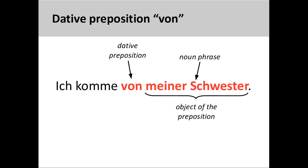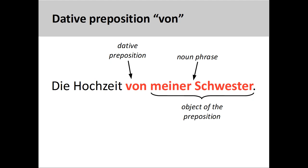The preposition von can be used to describe the act of arriving from a certain location or person, such as ich komme von meiner Schwester — I'm coming from my sister, or more loosely, I've come from visiting my sister. Von can also be used to express a relationship of belonging between two nouns, for example die Hochzeit von meiner Schwester — the wedding of my sister, or my sister's wedding. This construction with the dative preposition von is often used as a substitute for the genitive case, which we will examine in a later presentation.